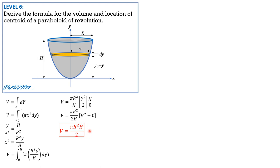If we interpret the volume of a paraboloid of revolution, it is one-half the volume of its circumscribing right circular cylinder. The volume of a right circular cylinder is π R² h, so the volume of the paraboloid of revolution is half of that: π R² h over 2.